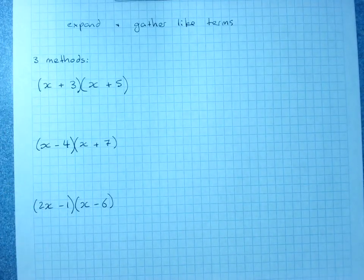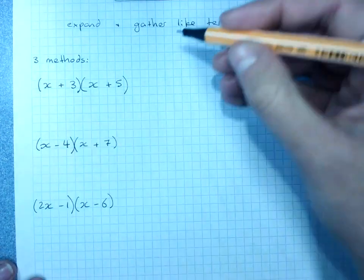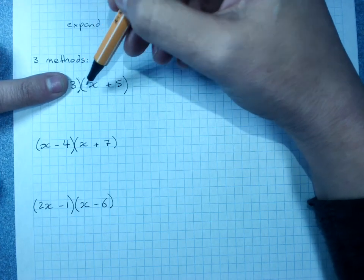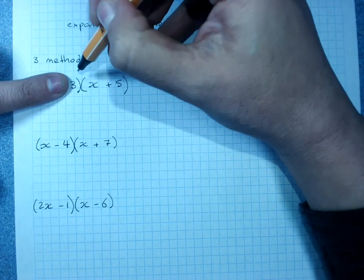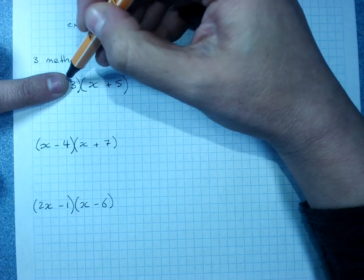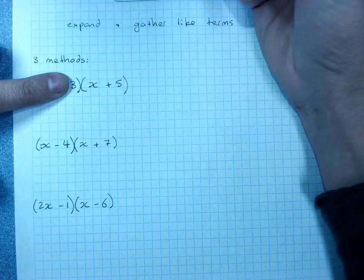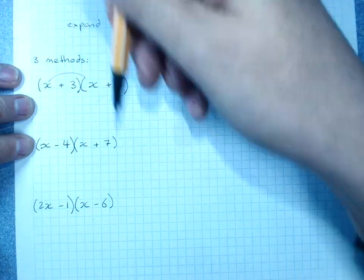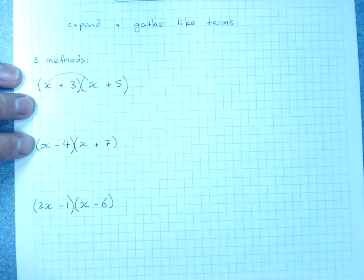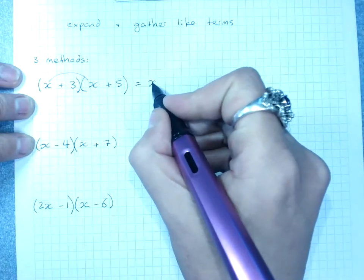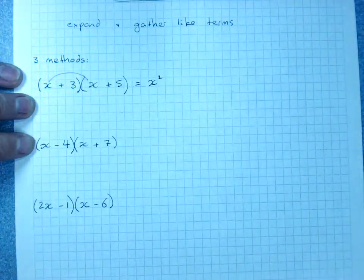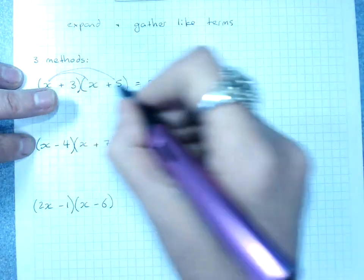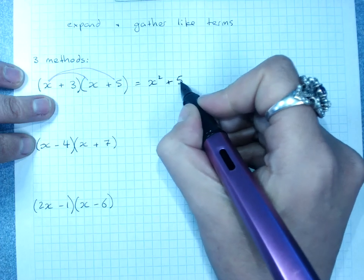One is what I tend to call the lobster claw method. And before when I taught you to expand, if I was just expanding 3 outside of x plus 5, I'd say draw the lines, 3 times x and 3 times 5. This means just drawing the lines again. So my lobster claw method, I'm going to do x times x. And I draw a line from x to x. That's x squared, x times x. x times 5.